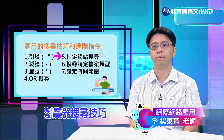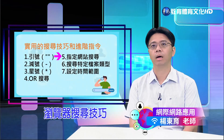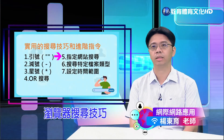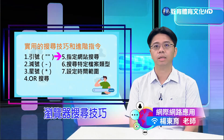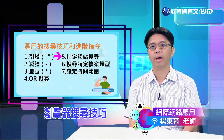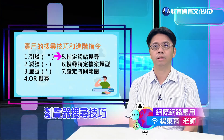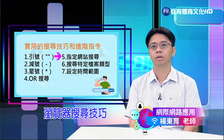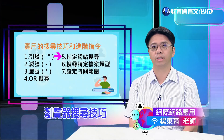第五个技巧是指定网站搜寻。使用 site: 关键字可以限定搜寻范围在特定网站内。例如搜寻「site:nytimes.com climate change」，会在纽约时报的网站上搜寻到关于气候变化的文章。